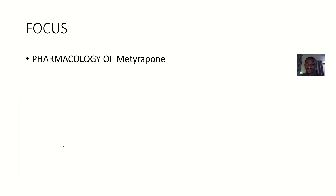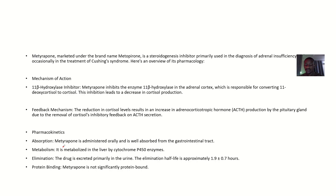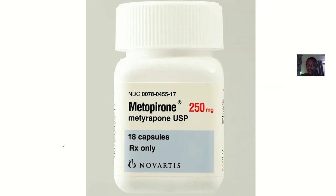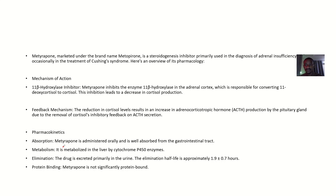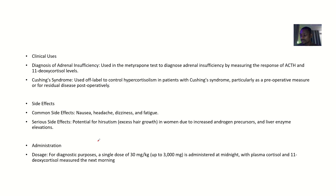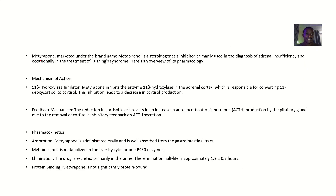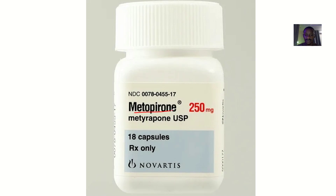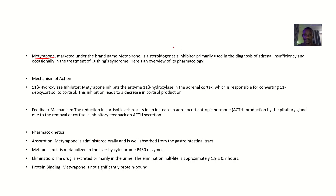We'll be starting with metyrapone. Metyrapone is mostly marketed under the name Metopyrone. It is a steroidogenesis inhibitor which is primarily used in the diagnosis of adrenal insufficiency.